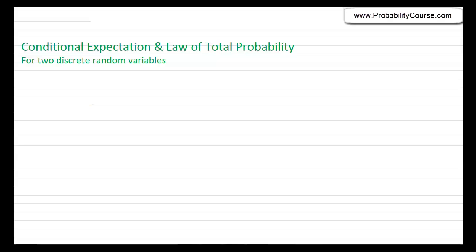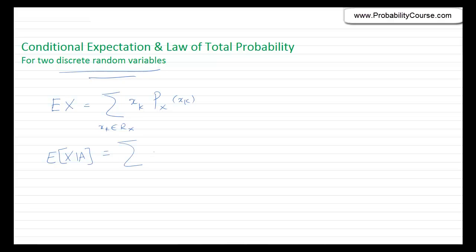In this video we talk about conditional expectation and the law of total probability, in particular for situations where we have two discrete random variables. If I have a discrete random variable X, the expected value is obtained by sigma xk * px(xk) for all xk in the range of X. If we have additional information — specifically, if we know that event A has occurred — we can talk about the conditional expectation of X given A. The definition is very similar; the only difference is that we replace the PMF of X by the conditional PMF. That's the expected value of X given that event A has occurred.